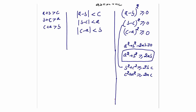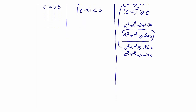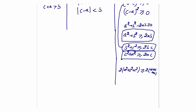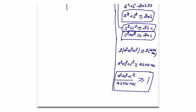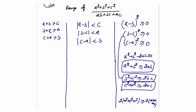Dividing both sides by ab+bc+ca (a positive quantity), we get (a²+b²+c²)/(ab+bc+ca) ≥ 1. So the lower bound is 1.